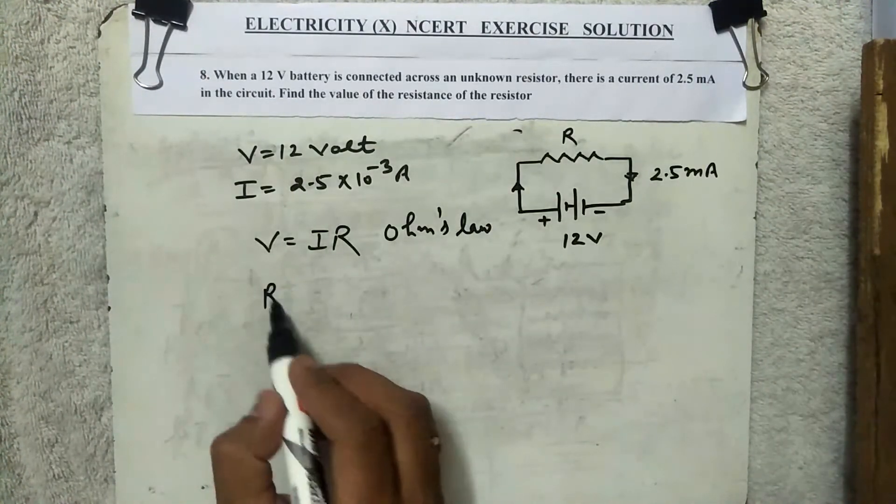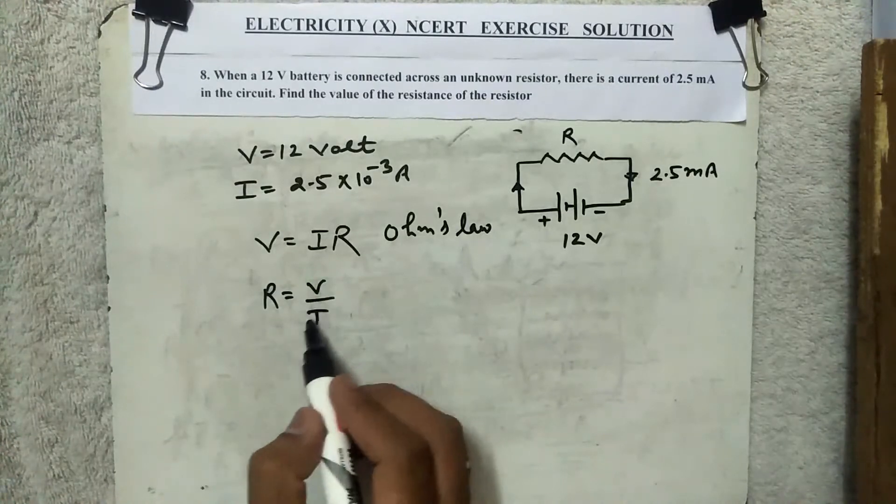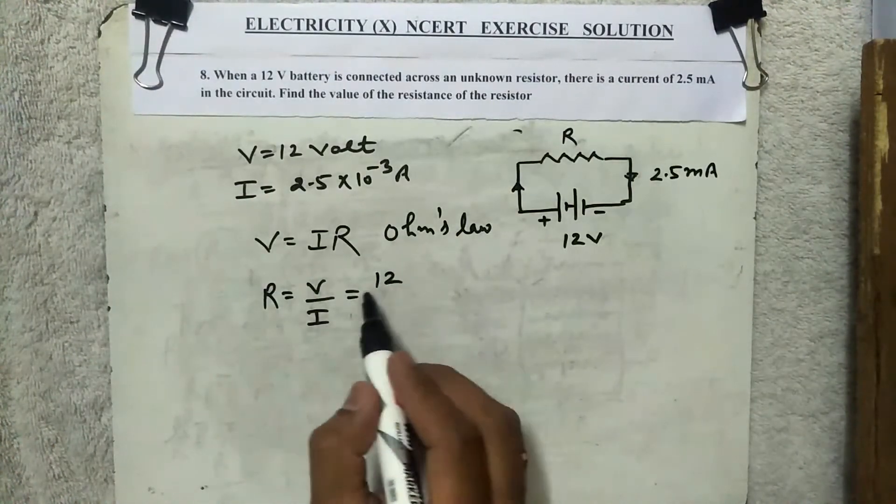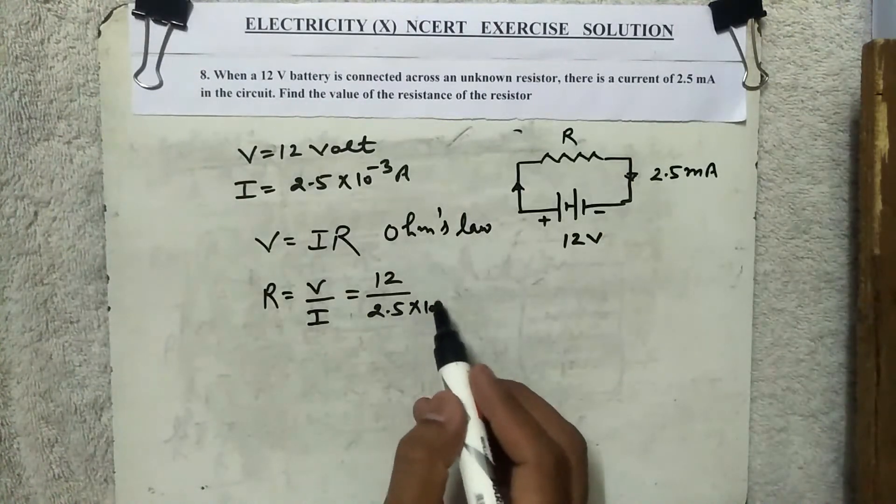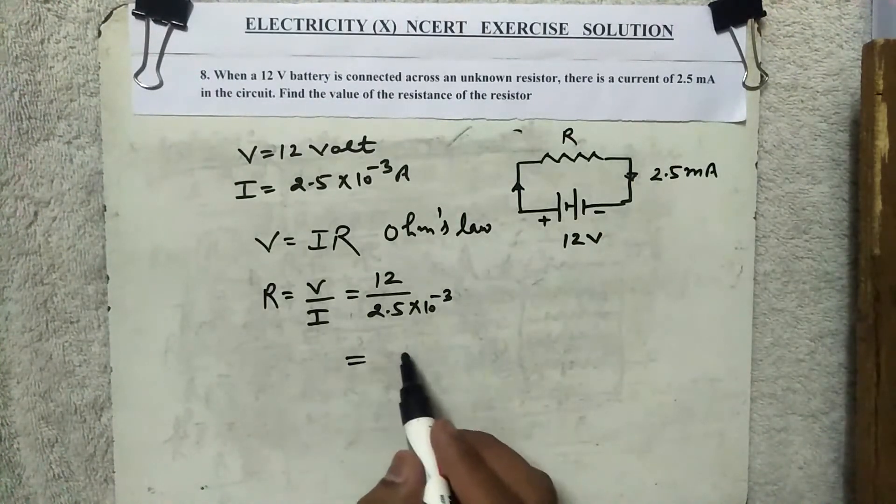So here we are. We divide by I. We have to divide by 2.5 into 10 raised to power minus 3. Clear? What will come?